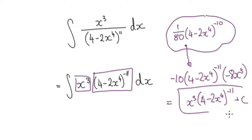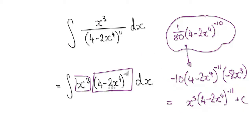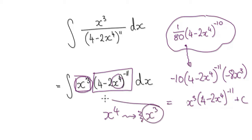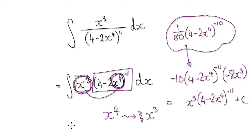So here we guessed our way to the answer. Notice that when you differentiate x to the power of 4, it would give something to the power of 3. So this thing here is the derivative of x to the power of 4. When you spot that this thing here is the derivative of this thing here, then you know you can guess your way to the answer — you know it's going to be simple.